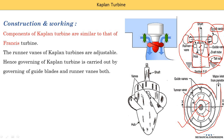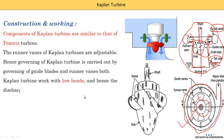Kaplan turbine and propeller turbines are similar, but in a propeller turbine the runner vanes are not adjustable — that is the only difference between propeller turbines and Kaplan turbine. In a propeller turbine the runner vane angle is not adjustable, but in a Kaplan turbine the runner vane is adjustable. The Kaplan turbine works with low head; hence the discharge for the Kaplan turbine is high — it is used for low head and the water quantity required is high.